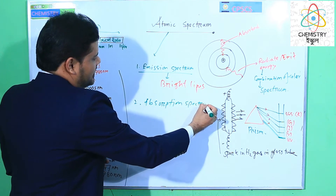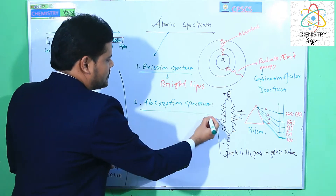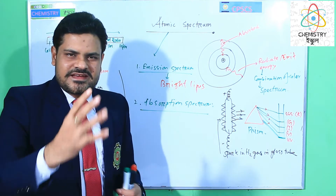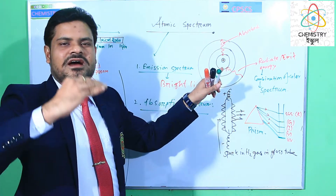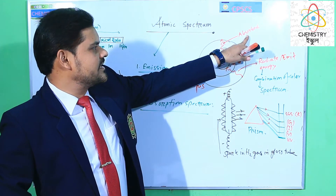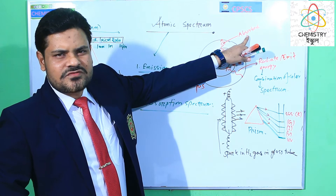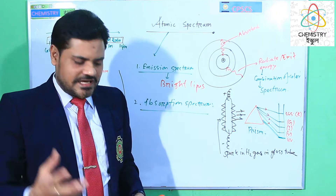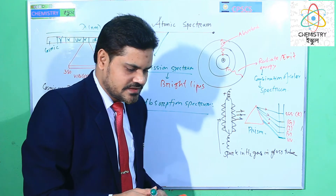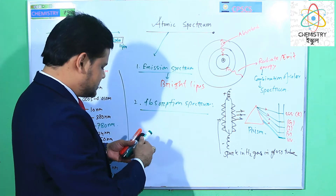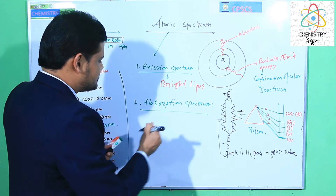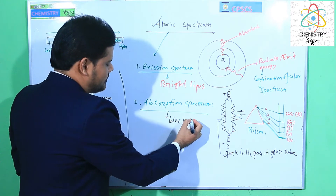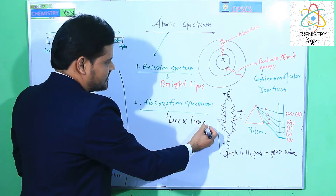Number two is absorption spectrum. When the electron gains energy and jumps to a higher energy level, the electron absorbs energy. From this, we get the absorption spectrum, which appears as dark black lines.